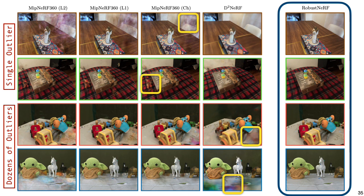We compare against MIPNERF 360 here with different losses such as L2, L1 and the original Charbonnier loss, as well as D2NERF, which is a competing state-of-the-art model designed for a similar task.